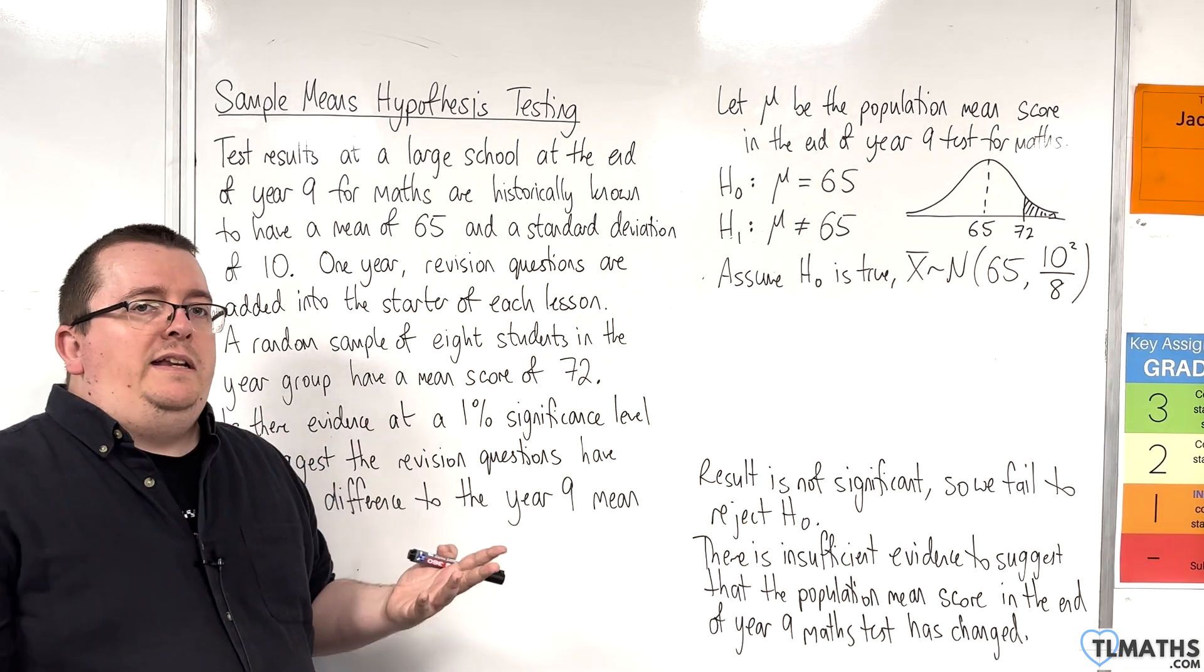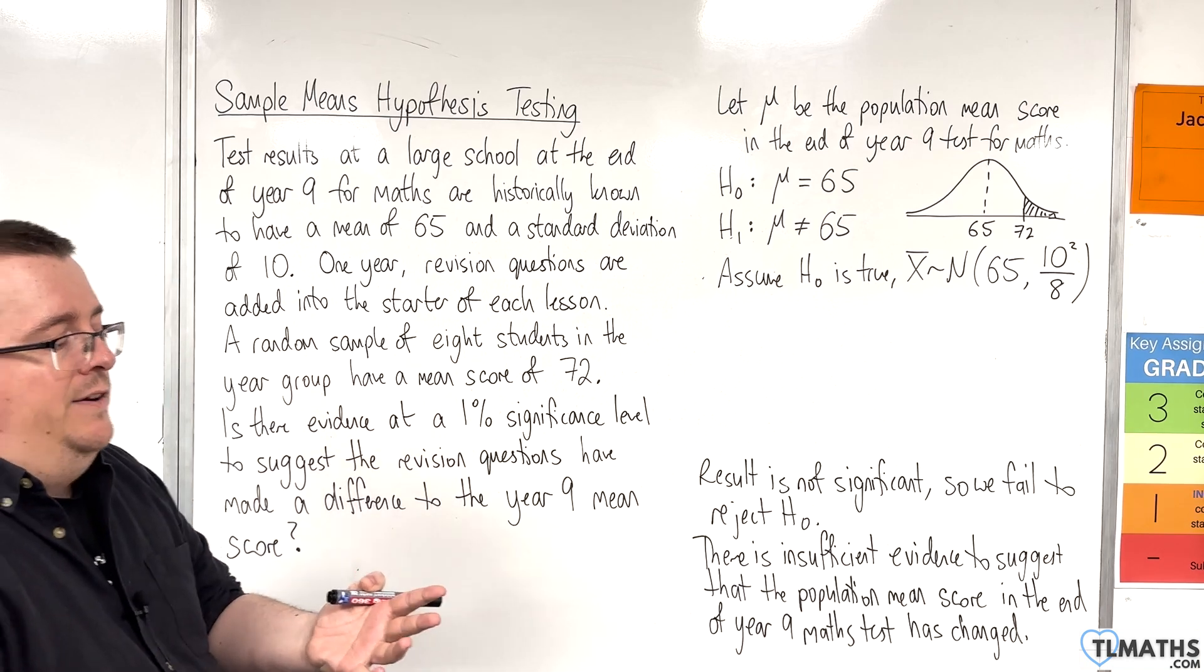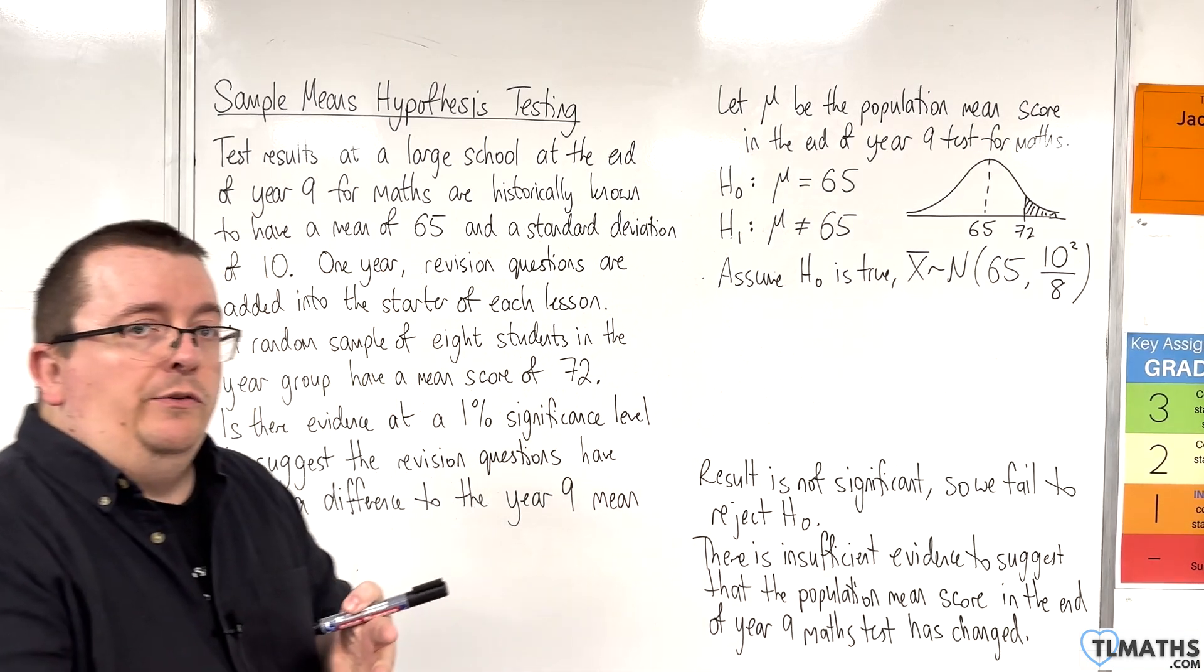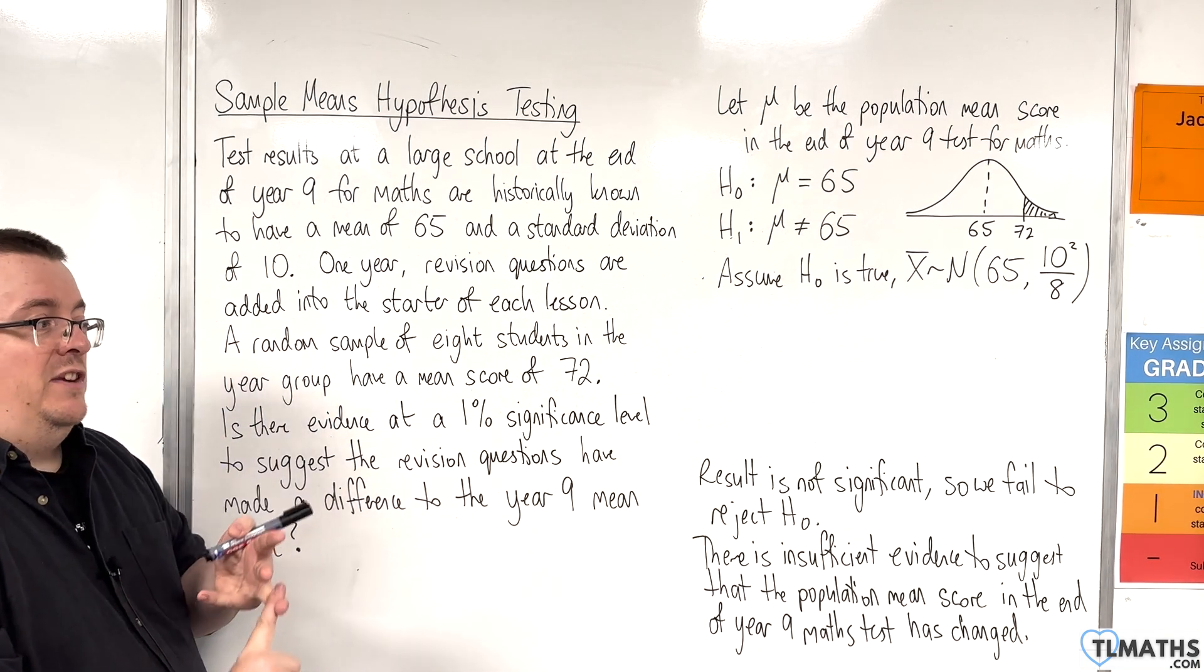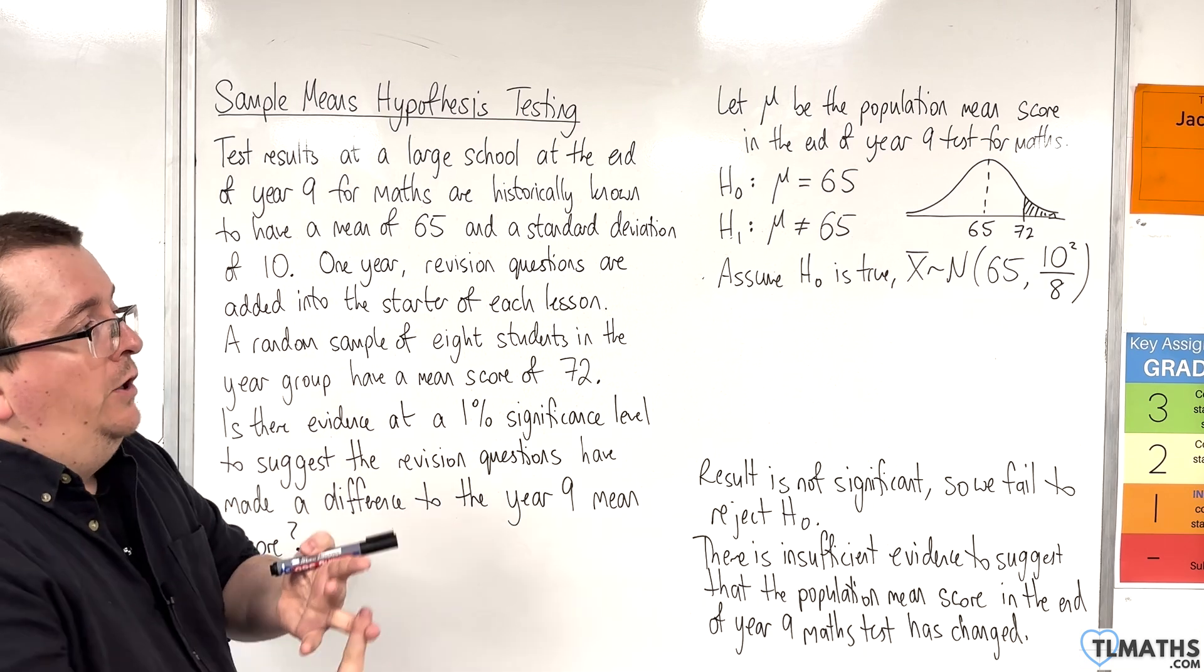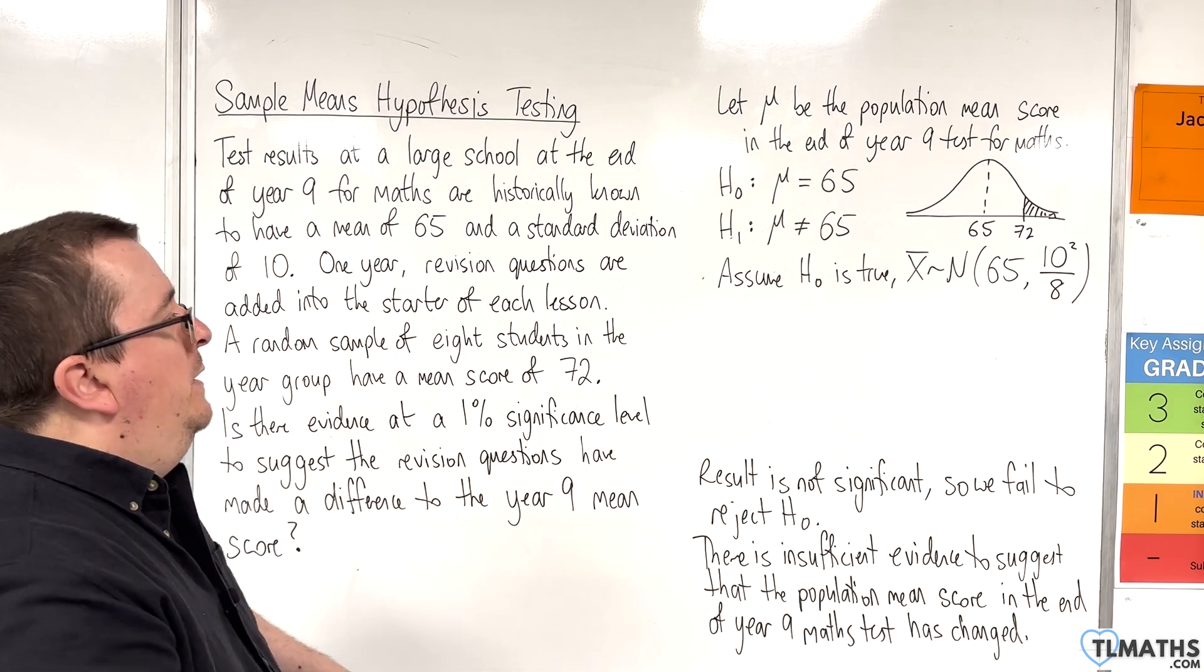All I need to do is find the test statistic and find the two values that we need to consider, essentially find the critical region on the standard normal.